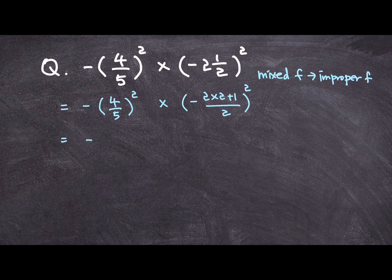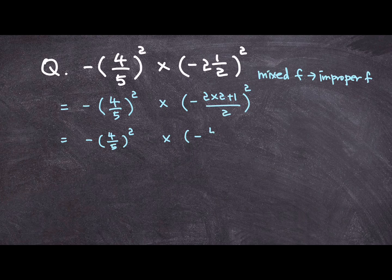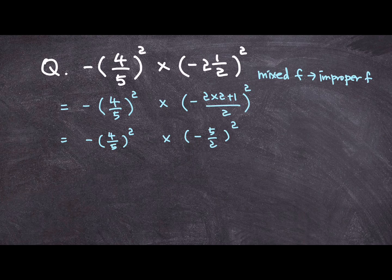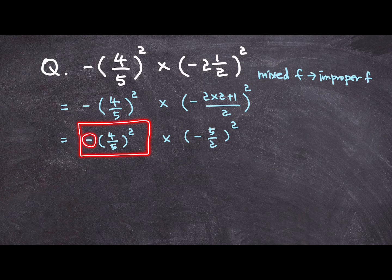So, what I end up with is parenthesis negative 5 over 2 squared. Now, if you take a look at this expression right here, we have negative sign, we have parenthesis, and we have exponent.